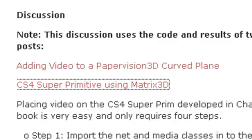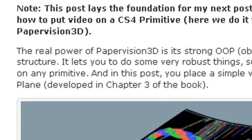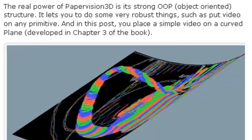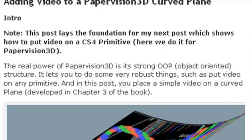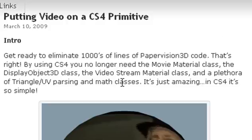Then you want to go to adding a video to a Paper Vision 3D curved plane. When I did this post, my whole intention was to give you the basics of how video is laid on to a curved primitive, and then once you get the basics, take those over to CS4. Now Paper Vision takes a lot of code to do this — thousands of lines. But with CS4 it's really simple. We get to eliminate tons and tons of code. CS4 no longer needs the moving material class, doesn't need the display object class, doesn't need the video material class, doesn't need a peripheral of triangle and UV parsing classes, and it doesn't need the math classes. It's all internal now, just using draw triangles.